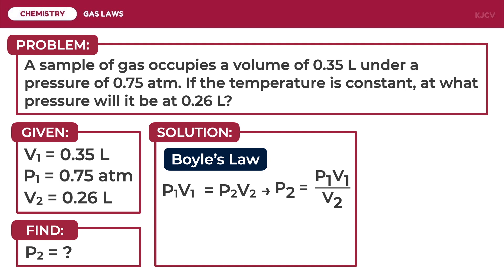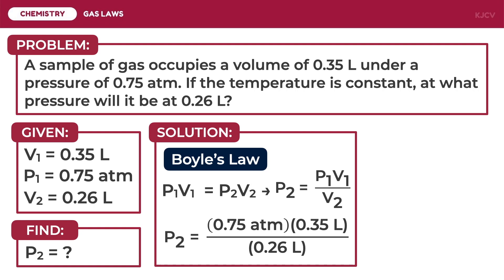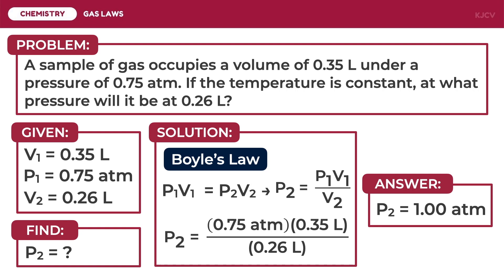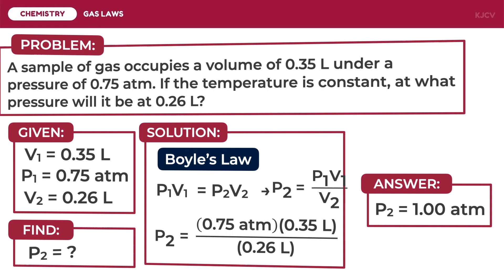Now we can plug in the values. P2 = (0.75 atmosphere × 0.35 liters) / 0.26 liters. The unit for volume cancels. Thus, the final pressure — the pressure at 0.26 liters — is 1 atmosphere. To verify our answer, we check for an inverse relationship. Since the volume decreased, the pressure should have increased. Our answer agrees with the pressure-volume relationship stated by Boyle's law.